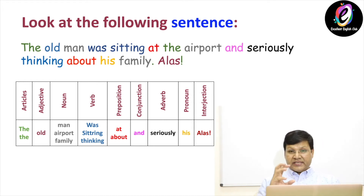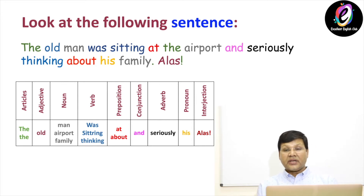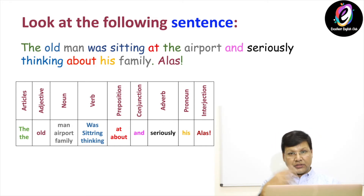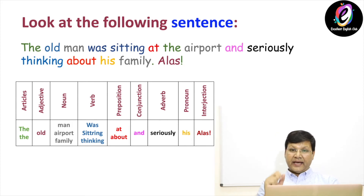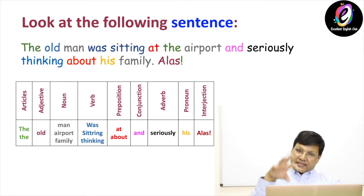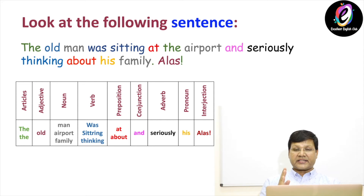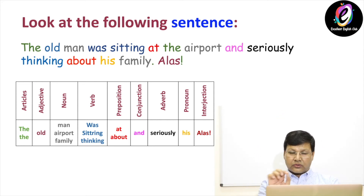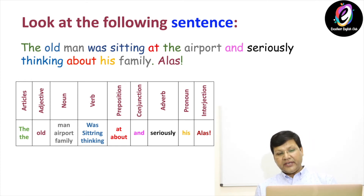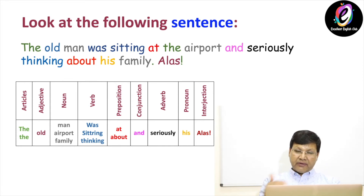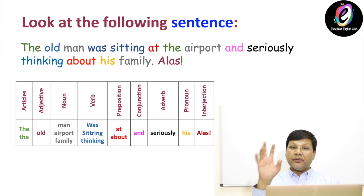Then adverb, which modifies a verb. What is an adverb? It modifies a verb — that is 'seriously.' The action is going on seriously; he is thinking seriously. Then pronoun — as I told you in the previous video, a pronoun is a word used in place of a noun. The last one is interjection, which expresses surprise — it may be happiness, sadness, or sudden surprise. Whenever you see an interjection you will have an exclamation mark. So these are the words divided according to parts of speech — eight parts of speech and one article, which we consider number nine.